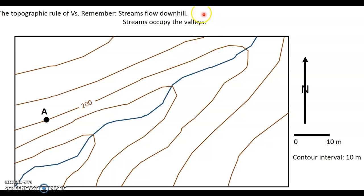And to explain it to yourself, you need to remember these two very straightforward concepts here. The streams flow downhill always, right? Water flows downhill and streams occupy the valleys. Streams flow at the bottoms of the valleys and that's usually because the streams have actually eroded those valleys.